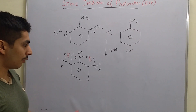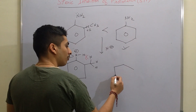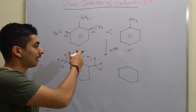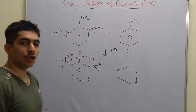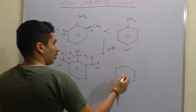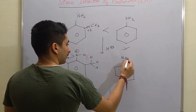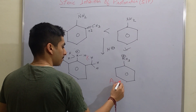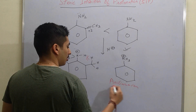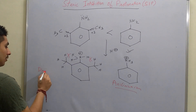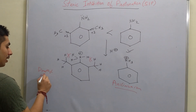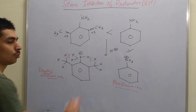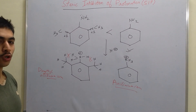One more thing I wanted to point out: there is one more way they can frame this question. Either they can ask which one is more basic — and you can immediately say aniline is more basic than dimethylaniline or orthomethylaniline. But the other way the question can be framed is: this species here is known as the anilinium ion, and this could be called the dimethylanilinium ion. They can ask: out of these two, which one has a higher pKa, or arrange them in order of pKa value?